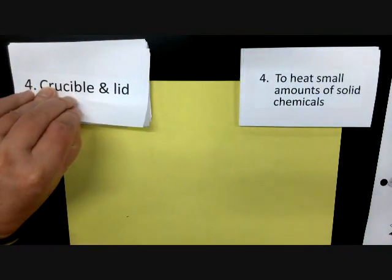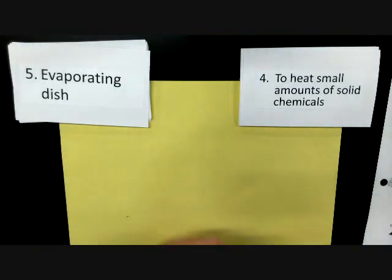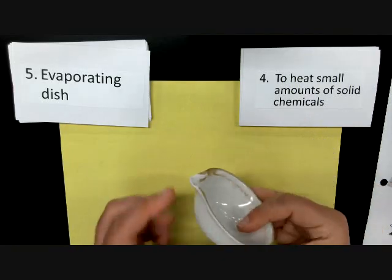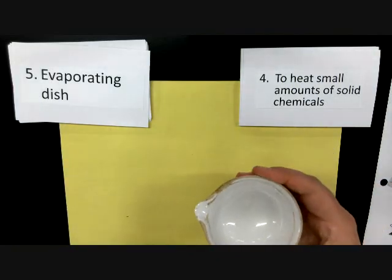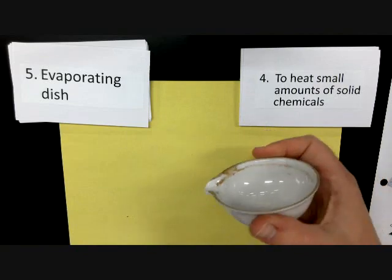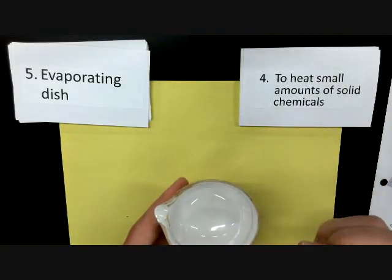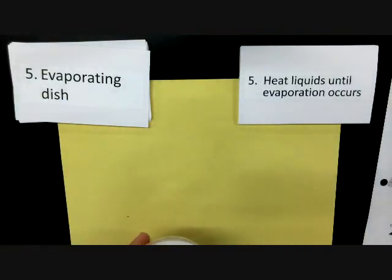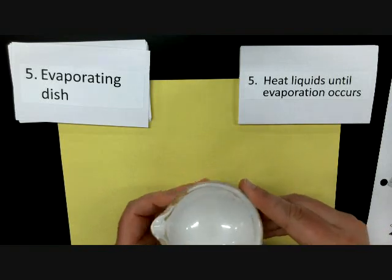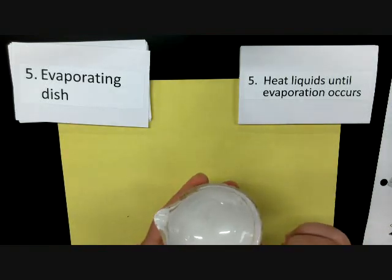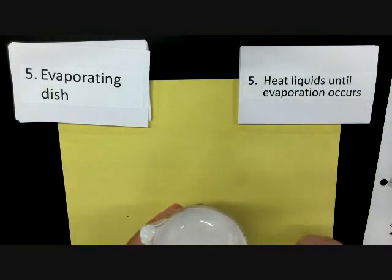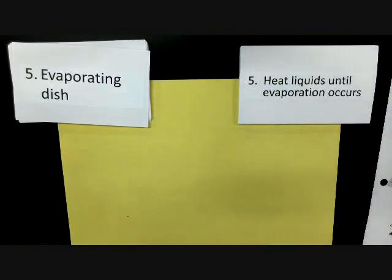The last one in the top row is also made out of ceramic and is called an evaporating dish. It kind of looks like a bowl, and there's a little lip for if you have liquids you need to pour out. The evaporating dish is used to heat liquids until evaporation occurs — to very high temperatures. The crucible is for solids and the evaporating dish is for liquids. Ceramic heats up to a higher temperature without cracking than glass, which is why we use it.